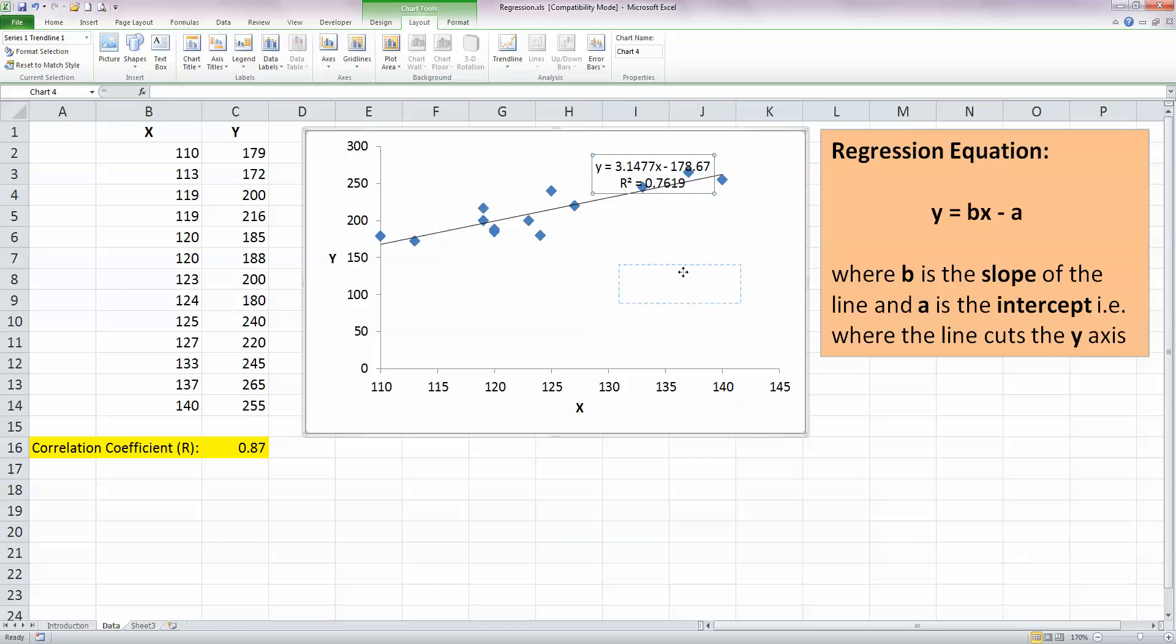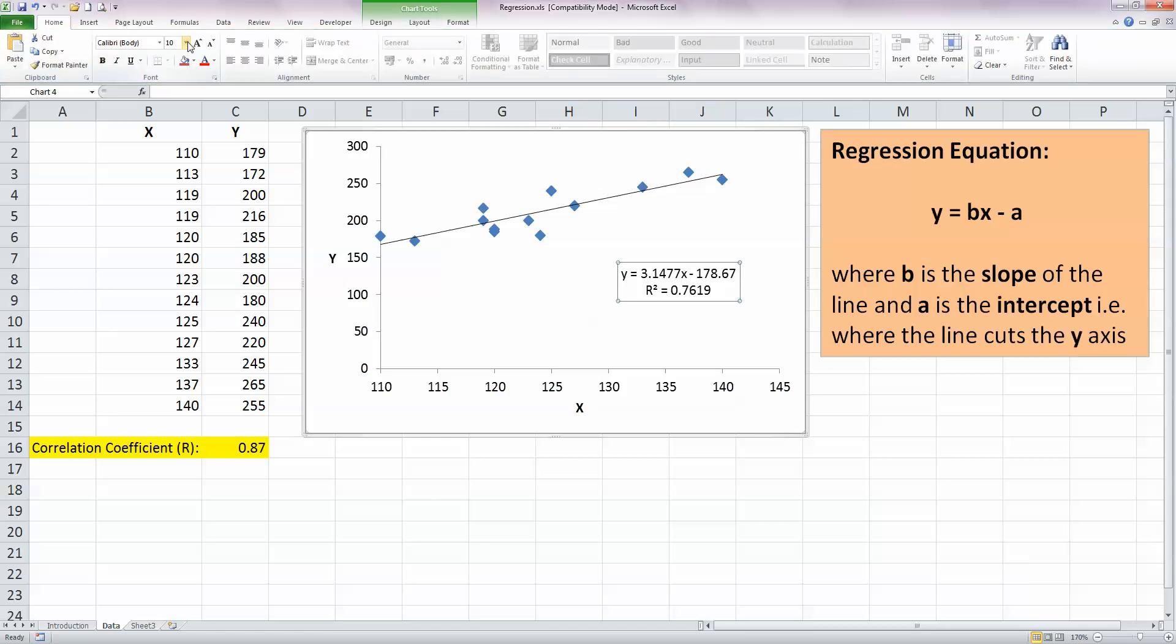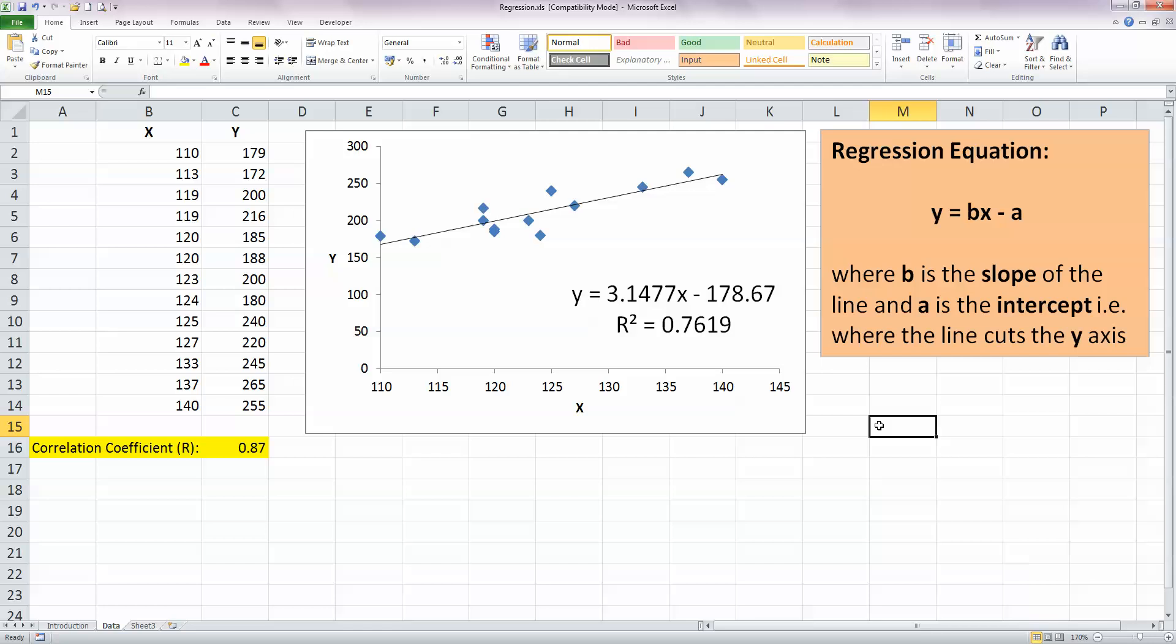Now here's the regression equation and the r-squared values. Just let me make those a little bit bigger, so we can see them a little bit better. And first off here, looking at the r-squared value, a maximum r-squared value is 1, which would be a line on our chart with all the dots perfectly matched on the line. So r-squared of 0.7619 indicates quite a strong correlation between these two data. Now don't forget, by the way, that correlation does not cause causation.